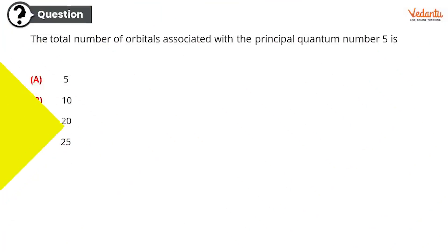And the first question is this. The total number of orbitals associated with the principal quantum number 5 is? Options are 5, 10, 20 and 25. So the correct response is D, 25. This is your solution. This is the reason behind it.